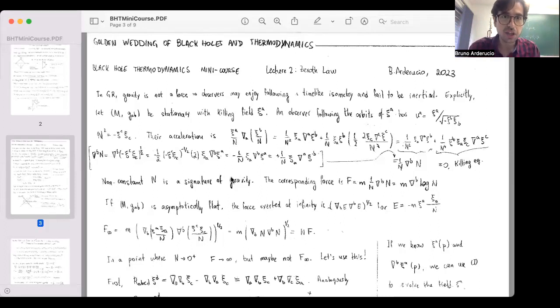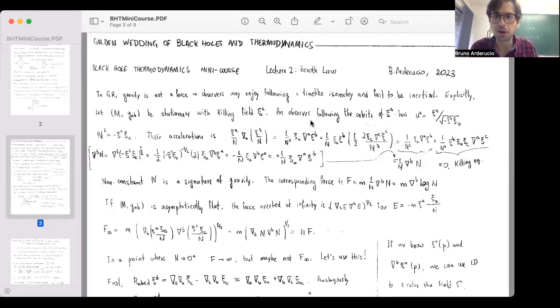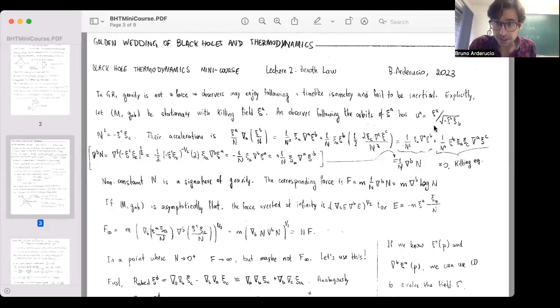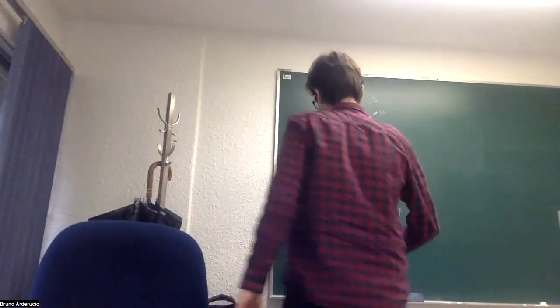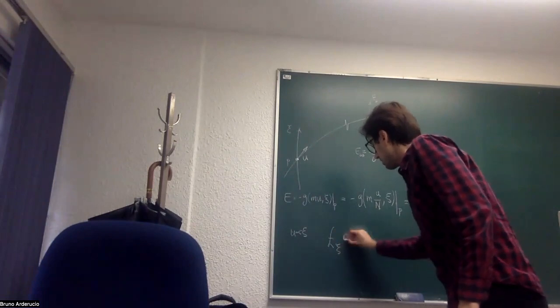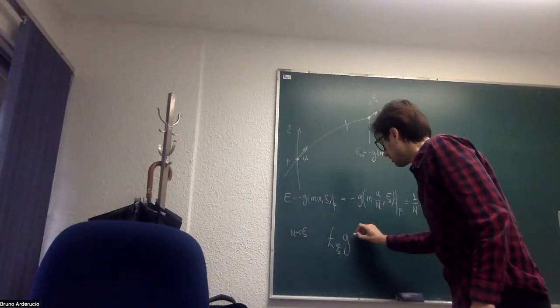Let's say we have a stationary manifold with a killing field ψ, and the observer — just like me — is following the symmetries, so my four-velocity is just the killing field. Let me stop sharing for a second because I didn't define killing fields at any point. A killing field ψ is one for which the Lie derivative of the metric is zero.